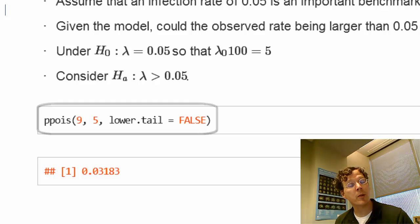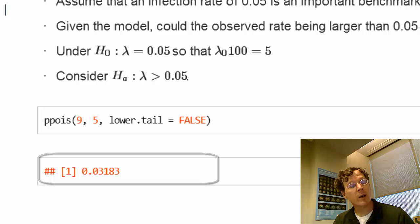So what is this probability? This is the probability of obtaining 10 or more infections if, in fact, the true rate of infections we should have seen on 100 person days at risk is 5.